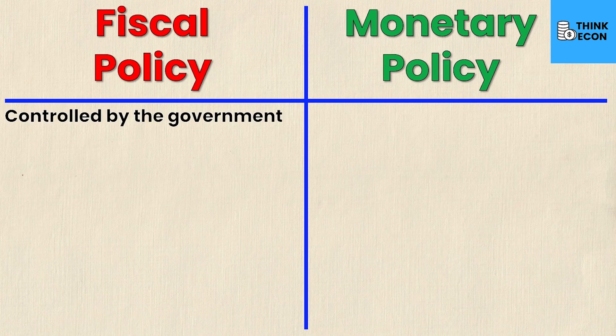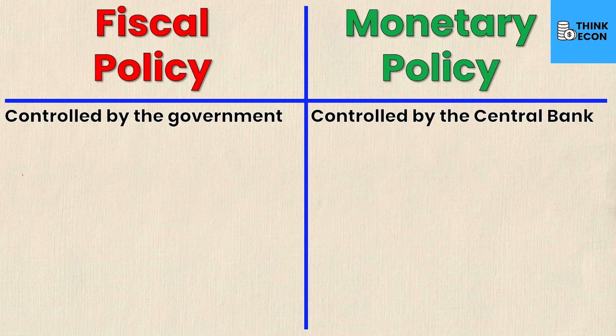Firstly, fiscal policy is controlled by the government — these are governmental decisions — and monetary policy is controlled by the central bank. Depending on which nation you're in that may be a different party, but in Canada that's the Bank of Canada, in the United States the Federal Reserve, and so on. Each country has a related central bank that implements monetary policy, whereas their government implements fiscal policy.